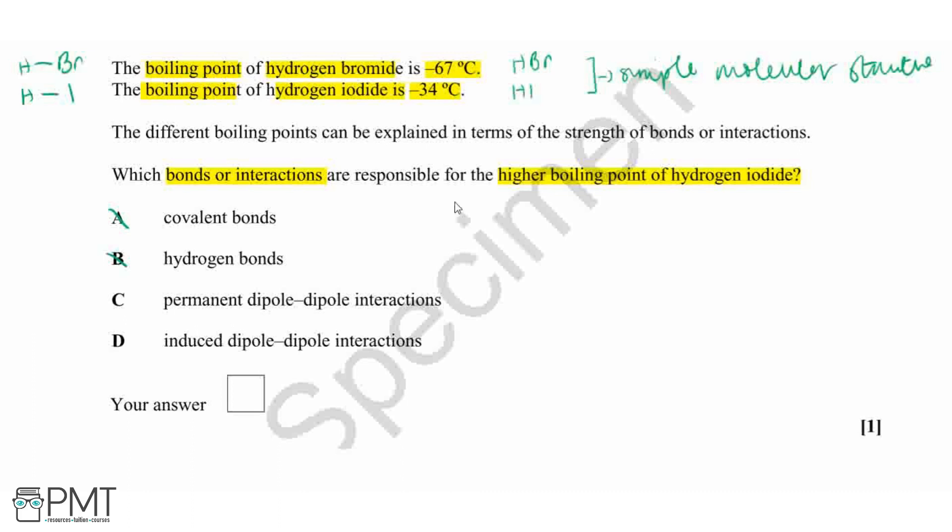Therefore, it must be the induced dipole-dipole interactions that explain the higher boiling point. This is because iodine is further down in the periodic table, so it has a larger number of electrons and hence stronger induced dipole-dipole interactions between the molecules.